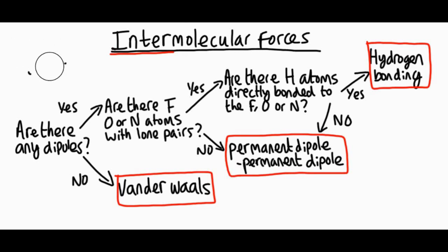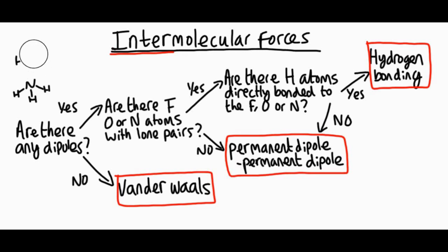Let's look at another example: ammonia, NH₃. The first question is, are there any dipoles? Yes, because nitrogen is more electronegative than hydrogen. Are there nitrogen, fluorine, or oxygen atoms with lone pairs? Yes — nitrogen. Are the hydrogens directly bonded to the nitrogen in the molecule? Yes. So the strongest type of intermolecular force is hydrogen bonding.